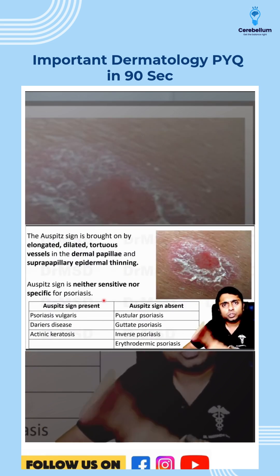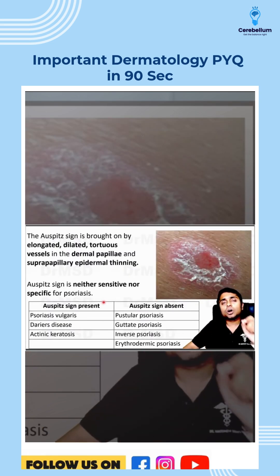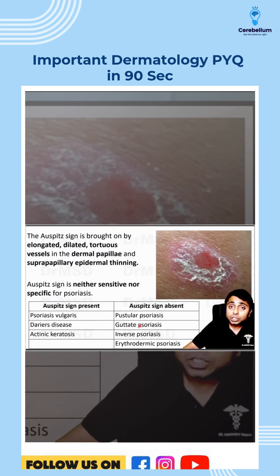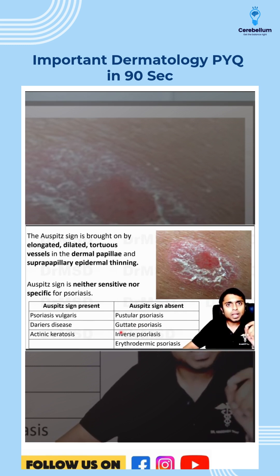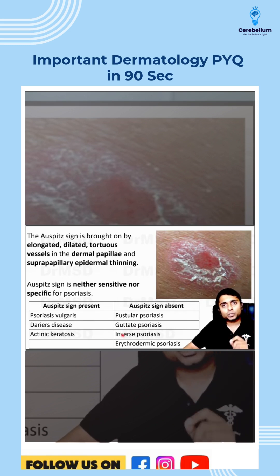Other types of psoriasis in which Auspitz sign is absent are guttate psoriasis, inverse psoriasis (also called flexural psoriasis), and erythrodermic psoriasis.